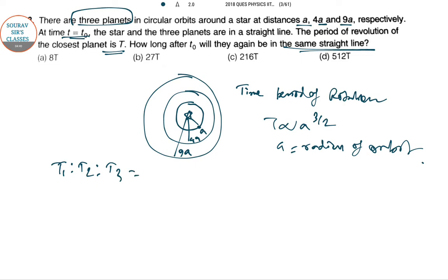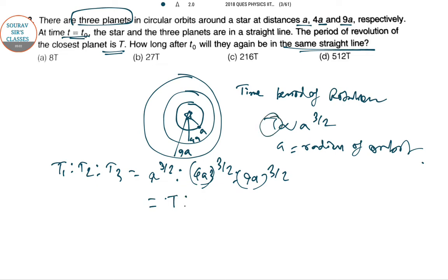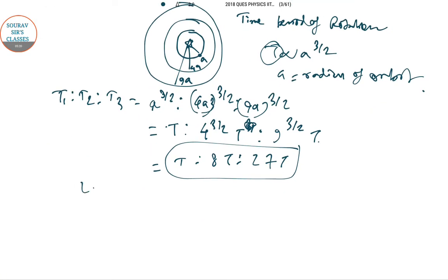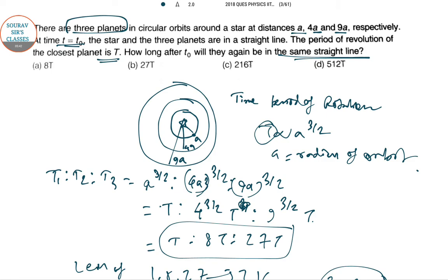So T₁ : T₂ : T₃ equals A^(3/2) : (4A)^(3/2) : (9A)^(3/2). This gives T : 4^(3/2)·T : 9^(3/2)·T, which simplifies to T : 8T : 27T. For all three planets to align again, we take the LCM of 1, 8, and 27, which is 216. So they will align after 216T. The answer is option C.